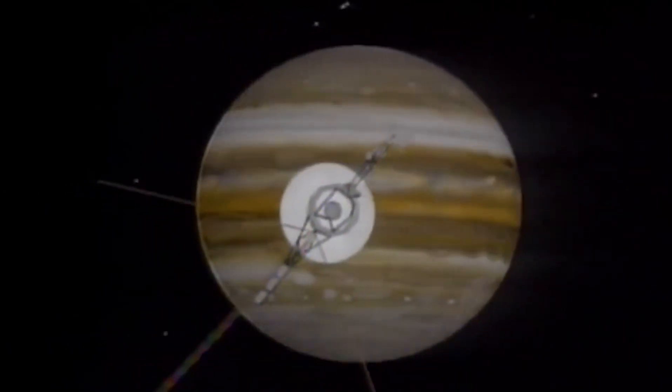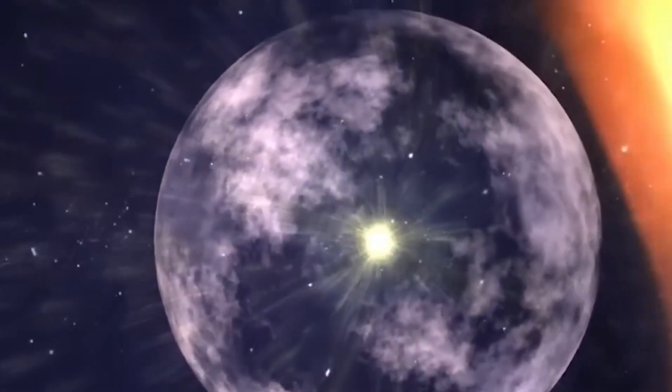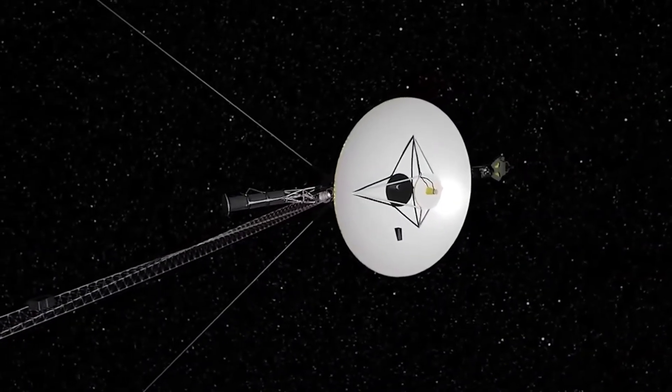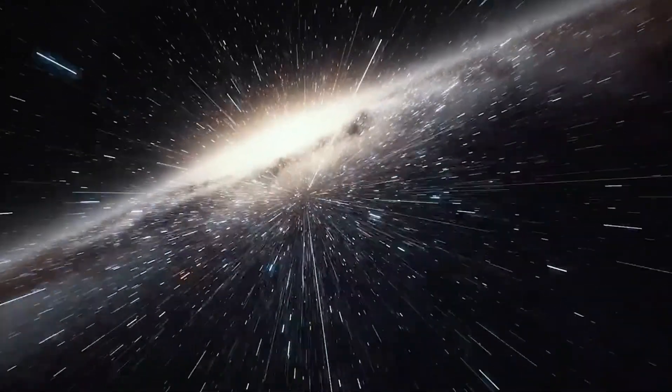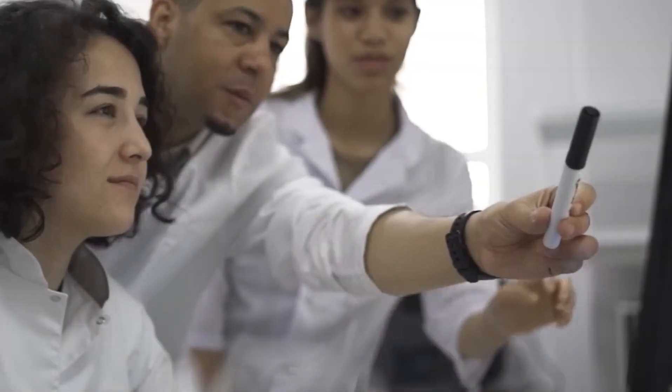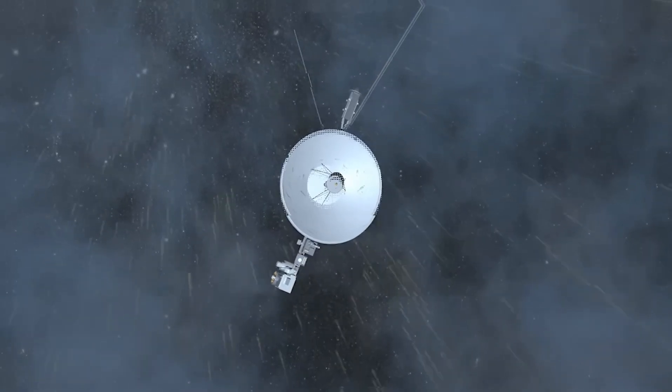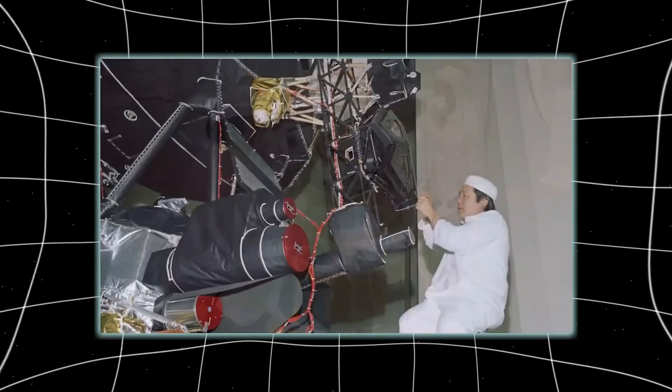Voyager 2 had long passed the planets, passed Neptune, passed Pluto, passed the heliopause, the invisible line where our sun's influence fades and interstellar space begins. Out there, it was expected to drift quietly, picking up minor fluctuations in space dust and solar radiation. But instead, it picked up movement. The kind of movement that doesn't happen by chance.